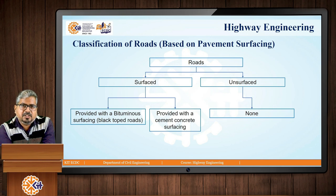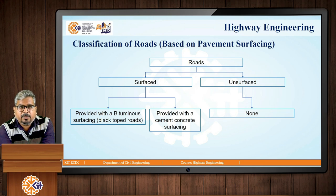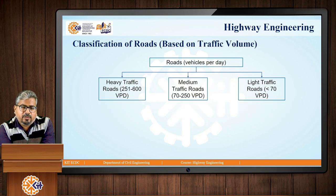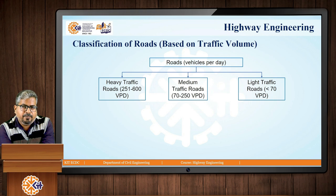Next is classification based on pavement surfacing, referring to what coating has been applied to the surface course. There are two types: surfaced and unsurfaced. Unsurfaced roads have no coating at all, while surfaced roads can have bituminous or cement concrete surfacing. Roads are also classified by traffic volume: very heavy traffic is more than 600 vehicles per day, heavy traffic is 251–600, medium traffic is 70–250, and light traffic is less than 70 vehicles per day.